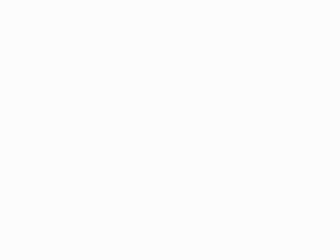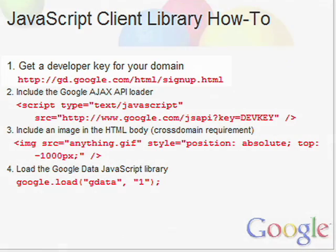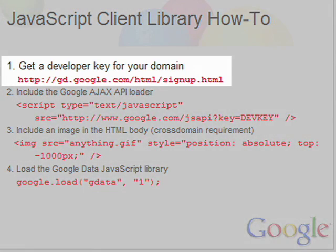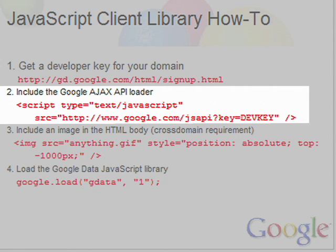Using the JavaScript client library is very easy. I'm going to show you the few steps that you need to do to set up your code to start using it. Step one: you have to sign up for a developer key. You do that by going to this website. Step two: you need to include the client library loader on your website by placing the script include with your developer key.